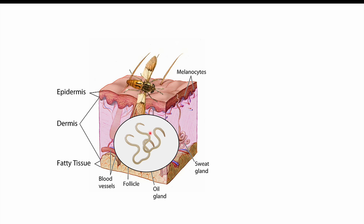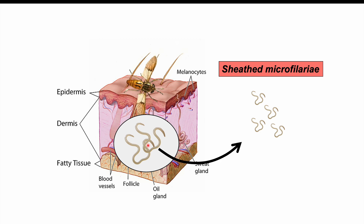The worms are in the L3 stage, able to cause infection, but not yet mature. They go through several different stages over weeks before becoming mature adults. Once matured, there can be female and male worms — females are larger. The females can produce anywhere from 12,000 to 39,000 larval worms called microfilariae, and they're going to be sheathed microfilariae, in contrast to other worm infections like river blindness.